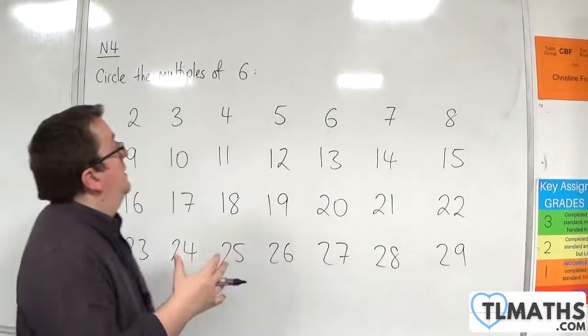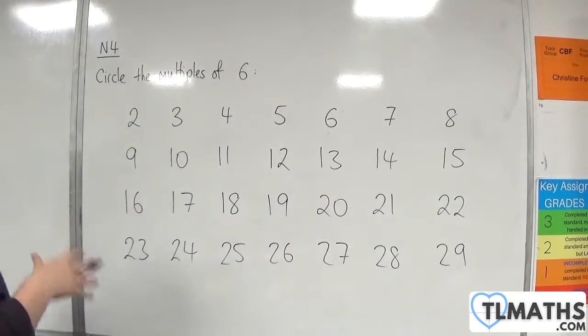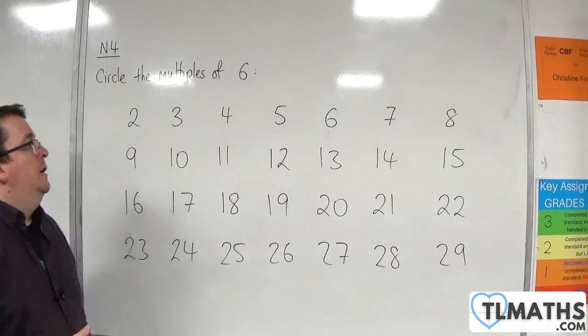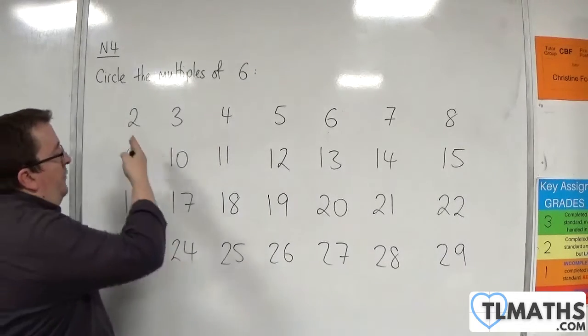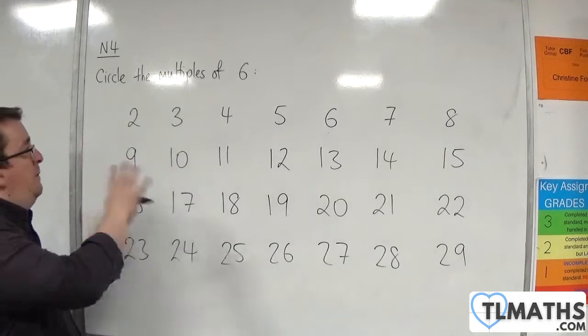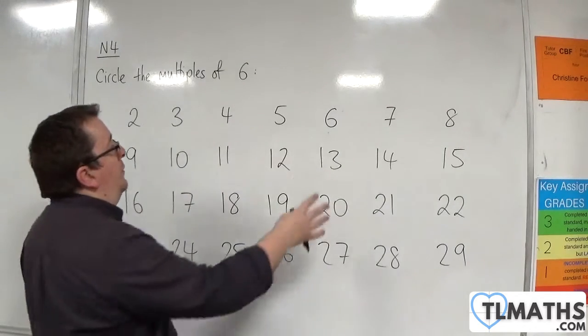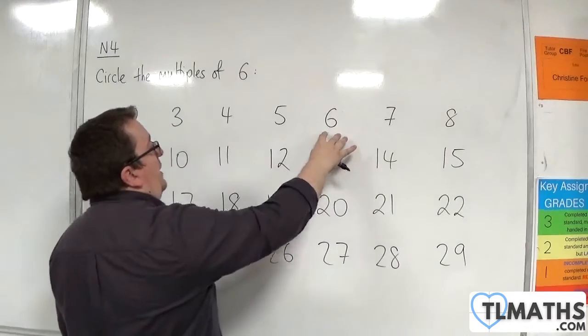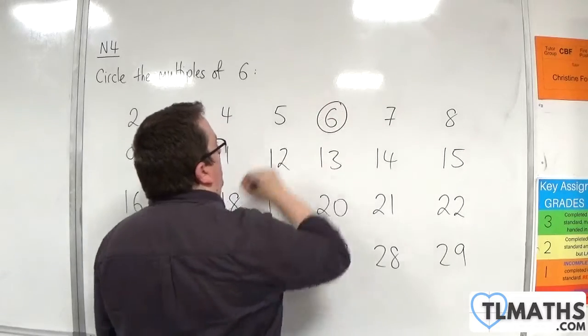In this question, I'm being asked to circle the multiples of 6. So we have the integers from 2 up to 29 inclusive. So the first multiple of 6 that you might spot is, of course, 6. 1 times 6 is 6, so we will circle that one.